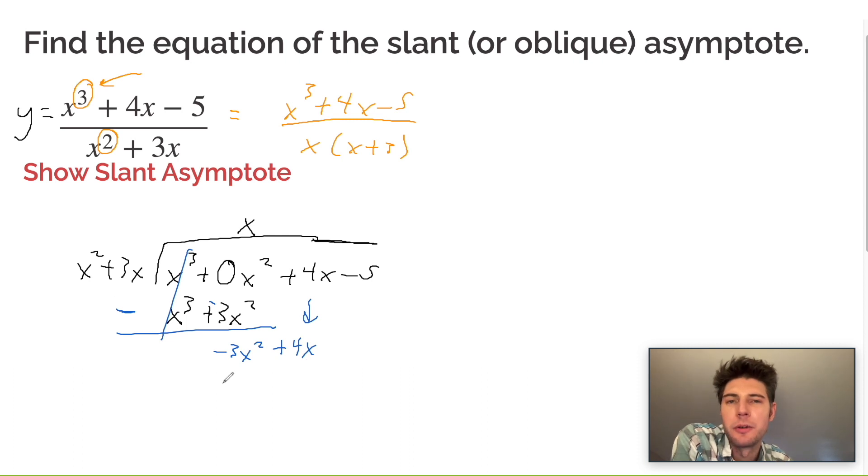And now how many times does x squared go into negative 3x squared? That's negative 3 times. Negative 3 times x squared is negative 3x squared. And negative 3 times 3x is negative 9x. Now when I subtract, that's going to make this a plus and this a plus. You want to be very careful with the double negatives there. These cancel and I'm left with 13x minus 5. And now x squared can't go into 13x. So that's just going to be what's left over. 13x minus 5 over x squared plus 3x.